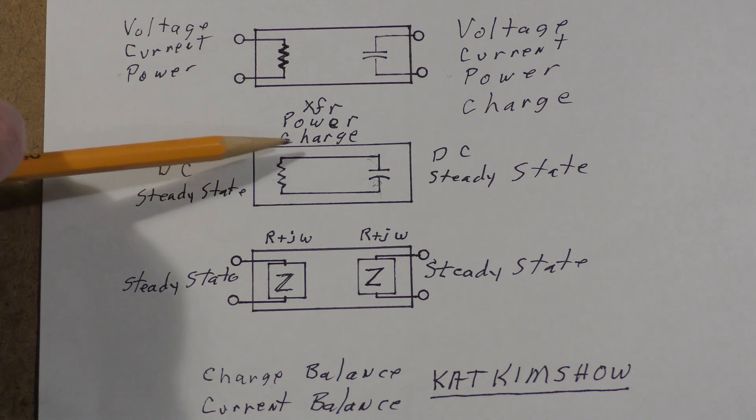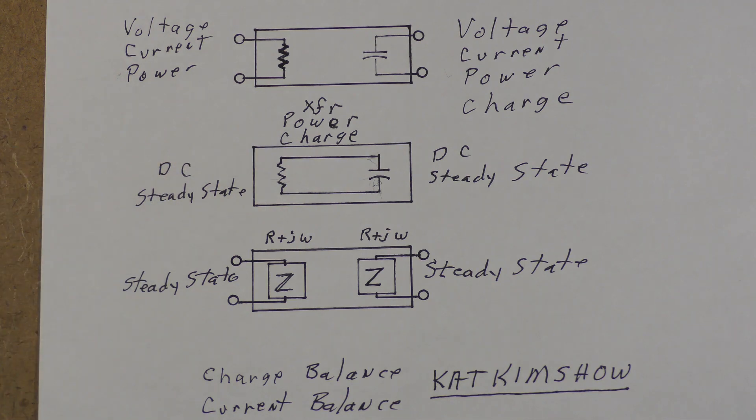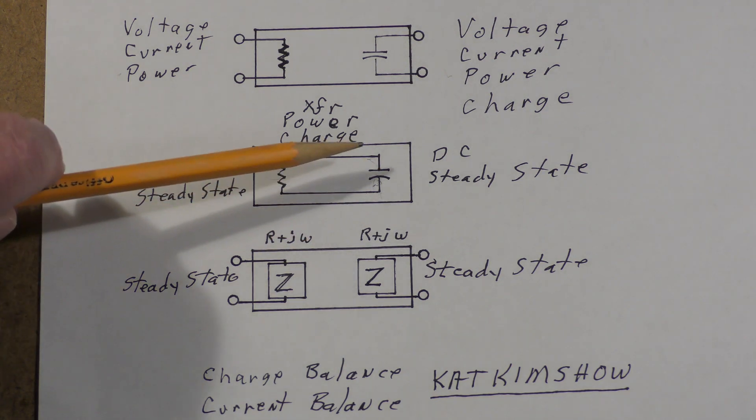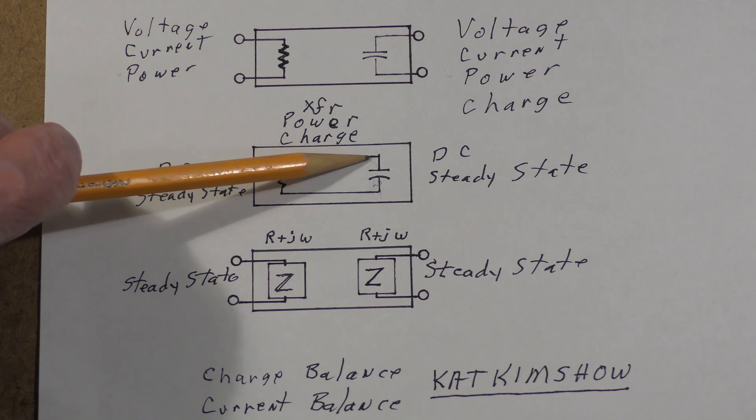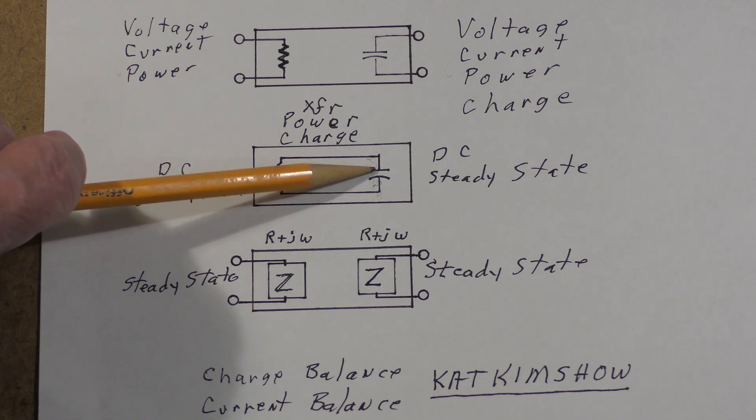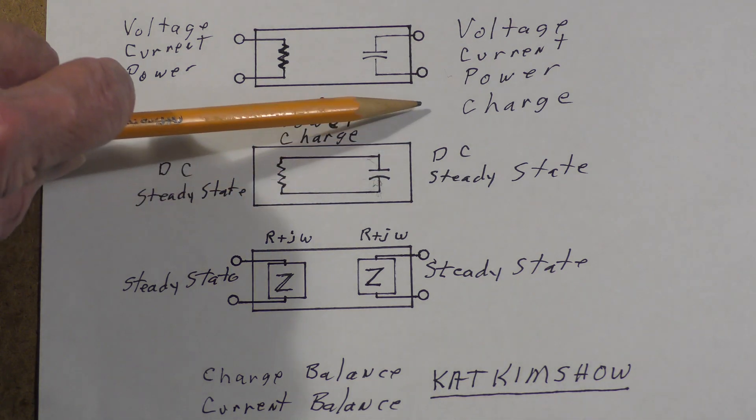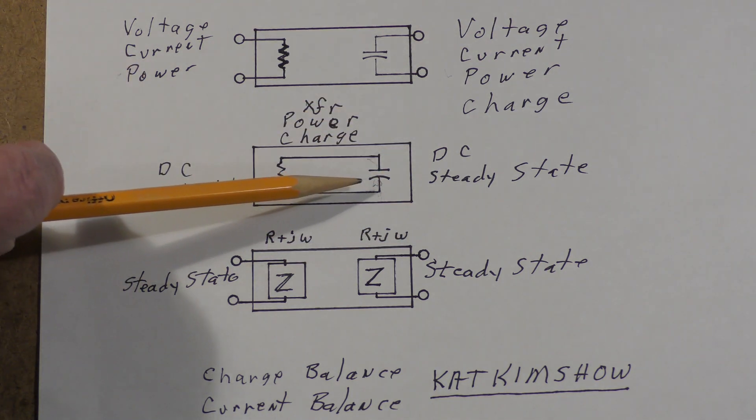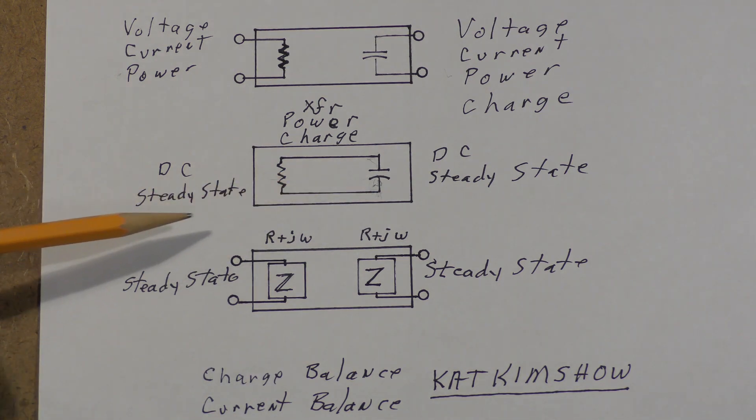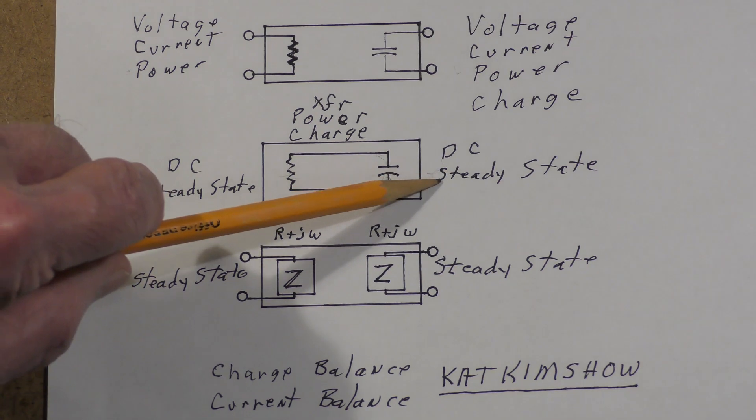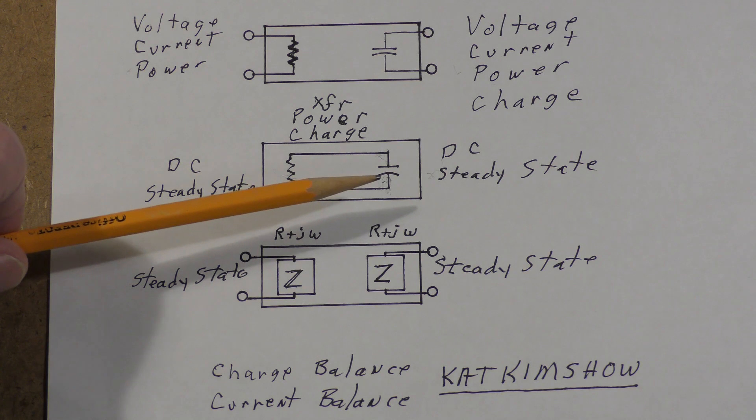A third thing that we haven't talked about very much is the idea of charge balance in a circuit. Anytime there's a capacitor in the circuit, the charge on the capacitor will be either rising or falling, or if over a period of time it has an average value, then you can use that average value, but to do that you have to be in the steady state.